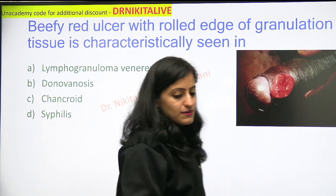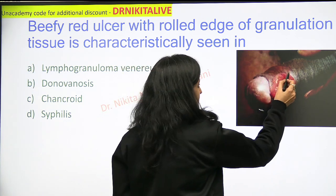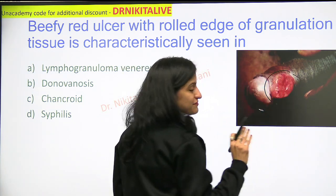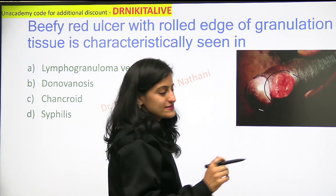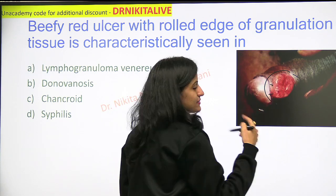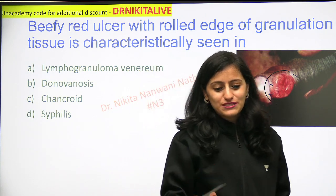Look at the image here. What we see is this beefy red ulcer with the rolled edge of granulation tissue.